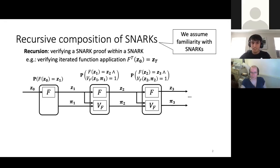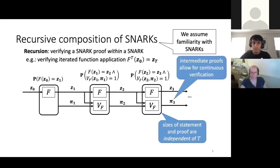So recursion here has some nice properties. First, the size of the statement that you prove is going to be independent of t, and the proof size is independent of t. Another nice property is that you can verify any intermediate state. So if you have a computation that goes on forever, like a blockchain, you can then verify the latest state. You don't have to wait until the blockchain is over before you can verify anything.